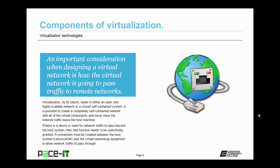An important consideration when designing a virtual network is how that virtual network is going to pass traffic to remote networks, or networks outside of the host system. Virtualization by its nature leads to either an open and highly scalable network, or a closed self-contained system. It is possible to create a completely self-contained network with all virtual components and never have network traffic leave the host machine. But if there is a desire or need for that network traffic to pass beyond the host system, then a connection must be created between the host system's physical NIC and the virtual networking equipment.